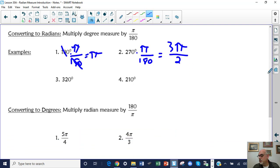Same thing with this one, 320 times pi over 180. If you go to your calculator and reduce the fraction of 320 over 180, you get 16 over 9, and again the pi goes in the numerator.